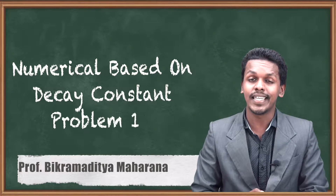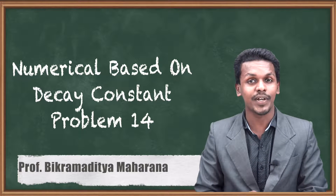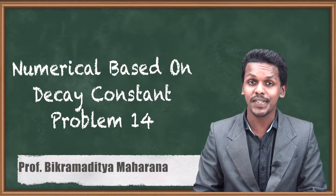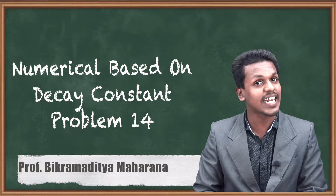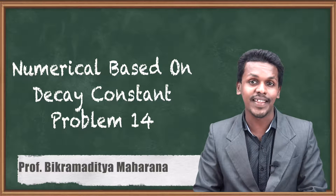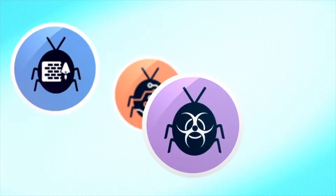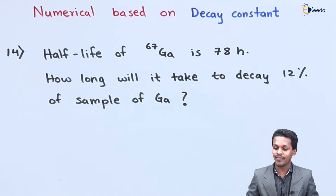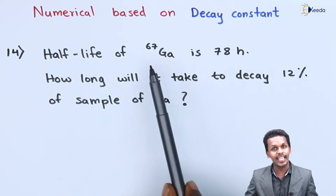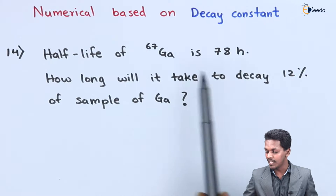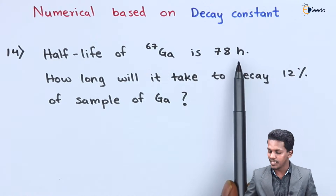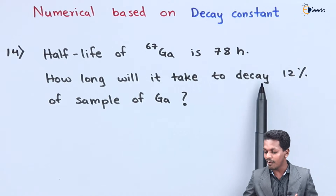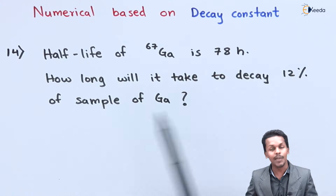Hello friends, here we are going to talk about the numerical based on decay constant, problem number 14. The question is: the half life for gallium-67 is 78 hours. How long will it take to decay 12% of the sample of gallium?